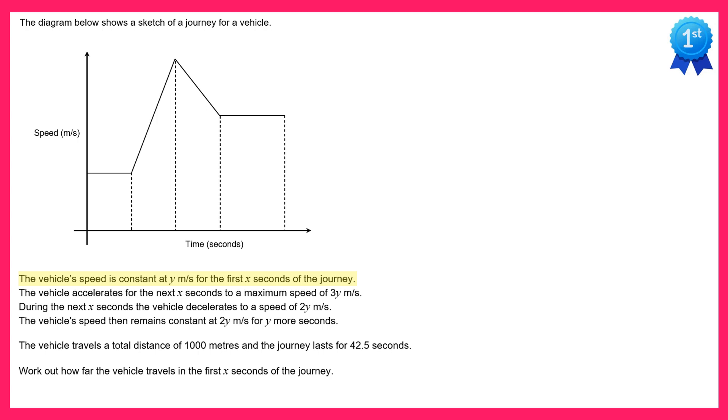So the first section of the journey is this one here. You can see the speed is constant due to the horizontal line and we're told that the speed is at y meters per second for x seconds. So the horizontal distance for this section must be x and the vertical distance for the section must be y.